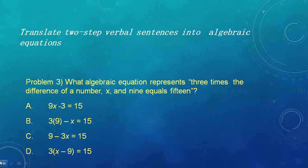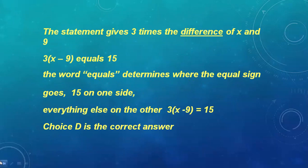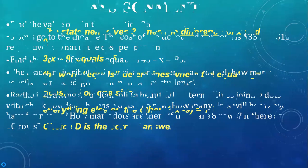My next problem is: what algebraic equation represents three times the difference of a number x and 9 equals 15? There are certain options. The statement is 3 times the difference of x and 9, which gives us 3(x - 9) = 15, which is the correct answer justified in the reverse statement.